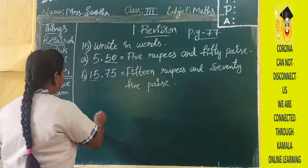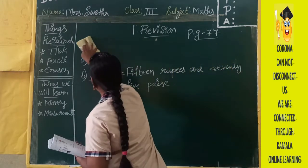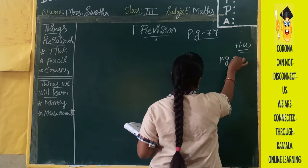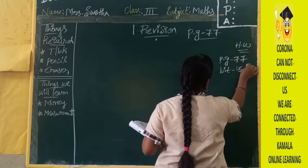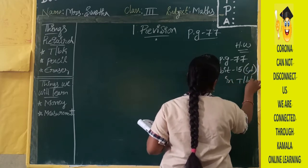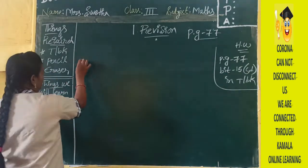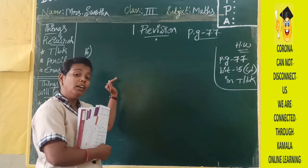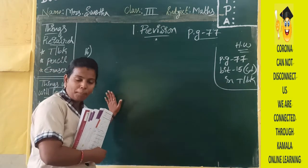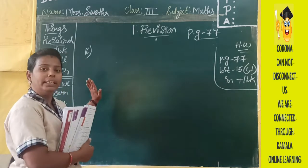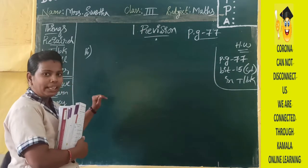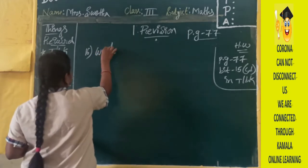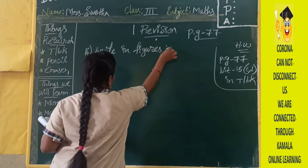Now see your 16th bit. This is the reverse of the 15th bit. In the 15th bit we wrote the word form — they gave it in number form and we wrote the spelling. In the 16th bit, now we are going to write the number form — they will give you the spelling and you have to write the number. Write in figures — figures meaning numbers.